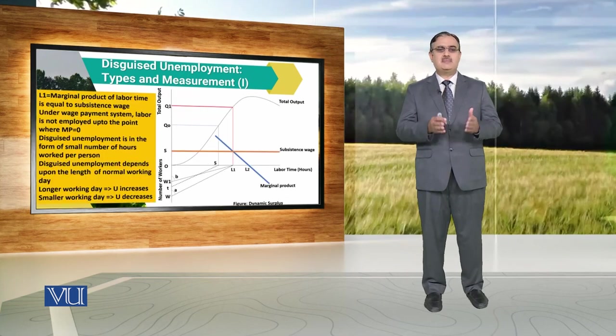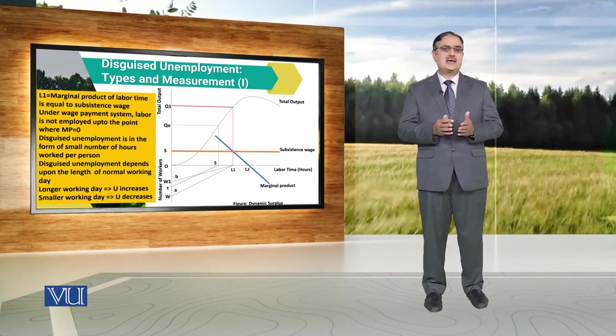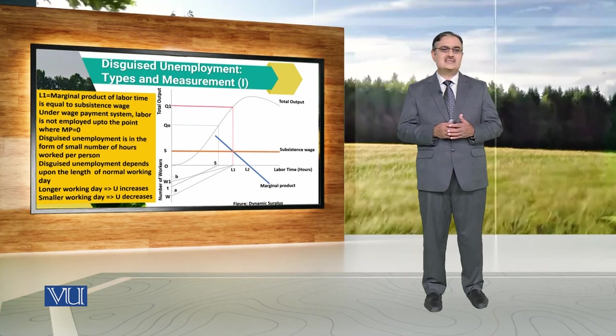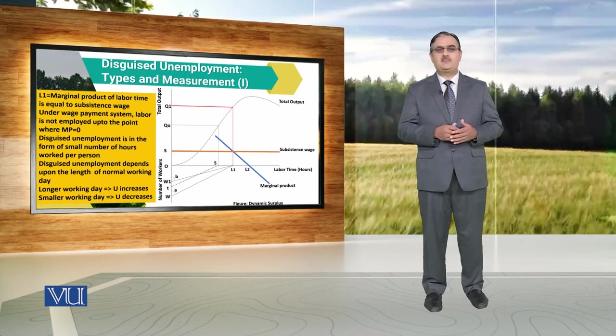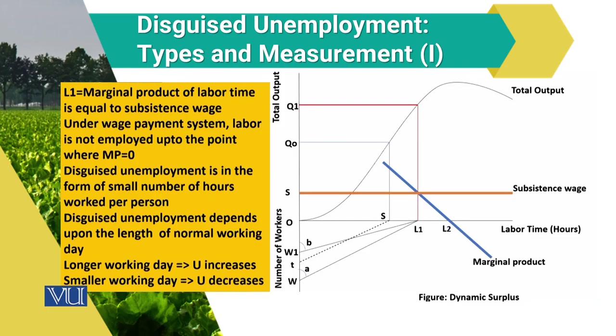To understand the concept of dynamic surplus, we will use this diagram. We are taking labour time in hours along the horizontal axis, while total output is along the vertical axis above the origin. Along the vertical axis below the origin, we are taking number of workers. There is a curve called Total Output that depicts the output produced against different labour time hours, and a horizontal line labeled as the subsistence wage that prevails in the market. There is also a downward sloping curve labeled as marginal product.